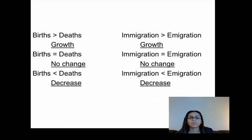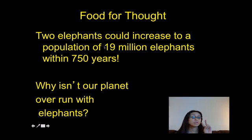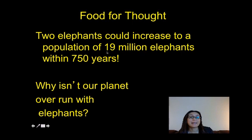Here's something to think about: two elephants could increase to a population of 19 million elephants in 750 years. Just starting with two elephants mating and producing offspring, in 750 years you wind up with 19 million elephants. So the question is: why isn't our planet overrun with elephants? Go ahead and think about that for a moment.